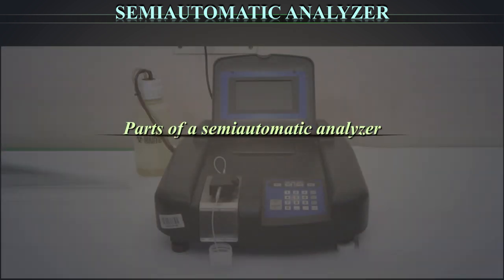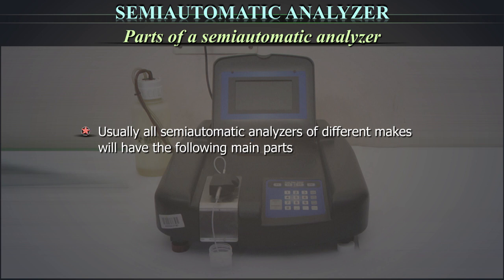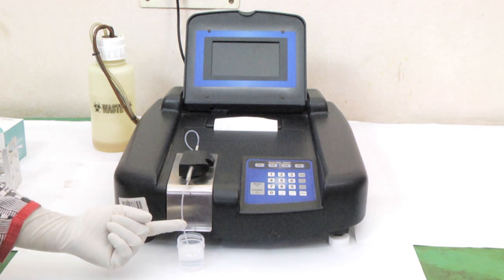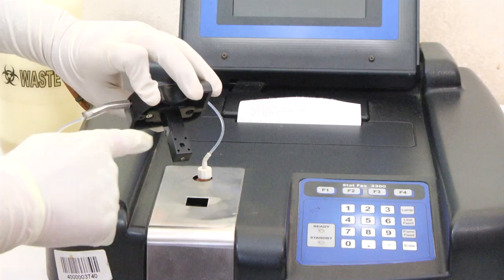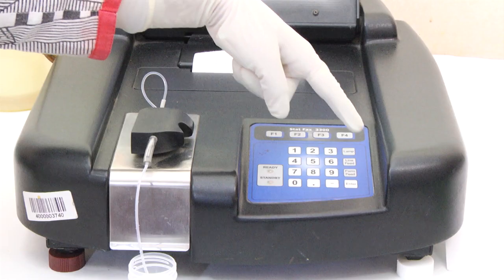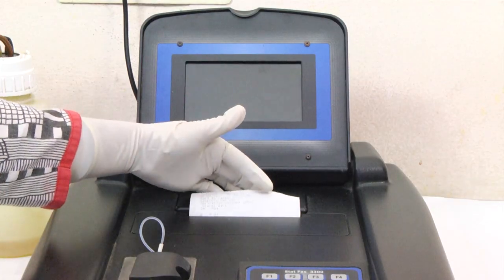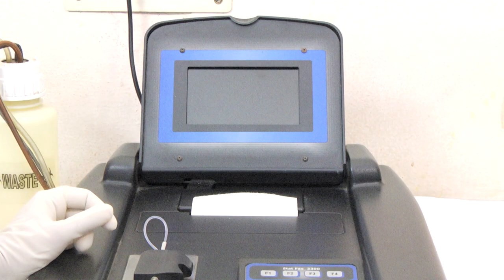Parts of a Semi-Automatic Analyzer: Usually all semi-automatic analyzers of different makes will have the following main parts: flow cell with aspiration tube. The flow cell has a tiny window through which the light passes. Screen, keypad with printer, waste bottle, and light source or lamp which is located internally.